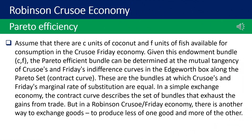Pareto efficiency: assume that their endowment bundle is (C, F). The Pareto efficient bundle can be determined at the mutual tangency of Crusoe's and Friday's indifference curves in the Edgeworth box along the Pareto set — these are the bundles at which their marginal rates of substitution are equal. In a simple exchange economy, the contract curve describes the set of bundles that exhaust the gains from trade. But in a Robinson Crusoe–Friday economy, there is another way to exchange goods: to produce less of one good and more of the other.